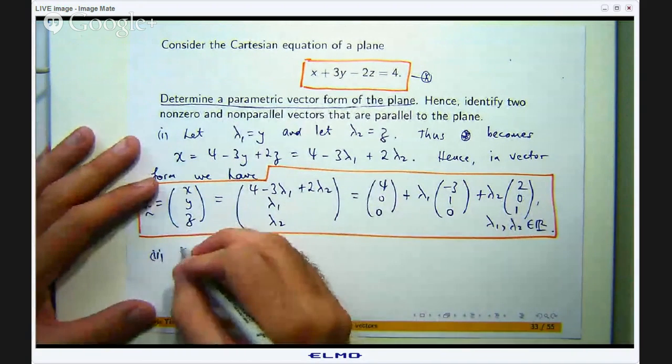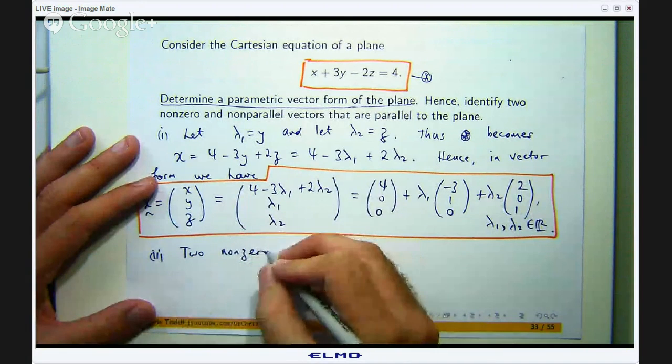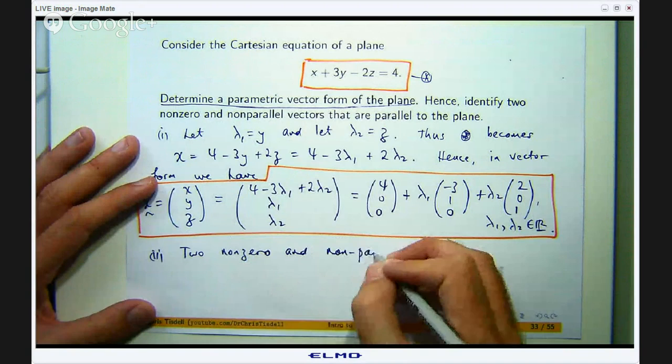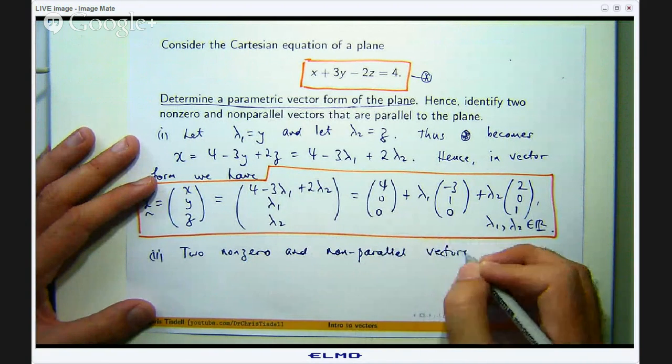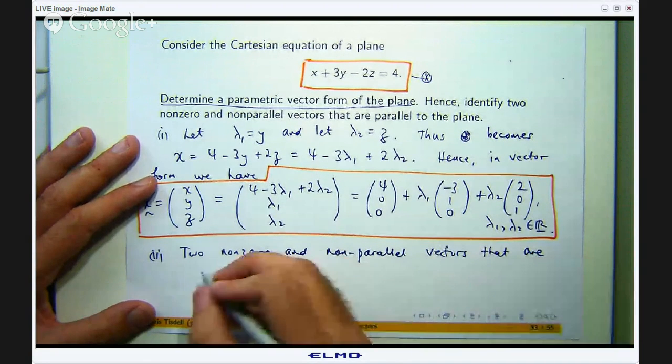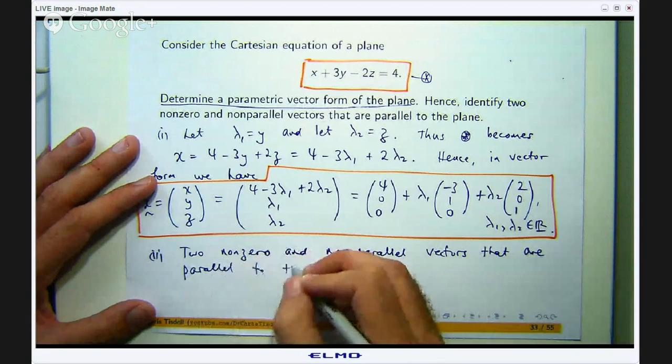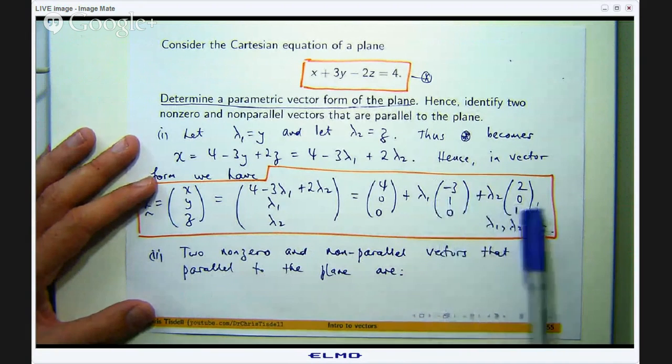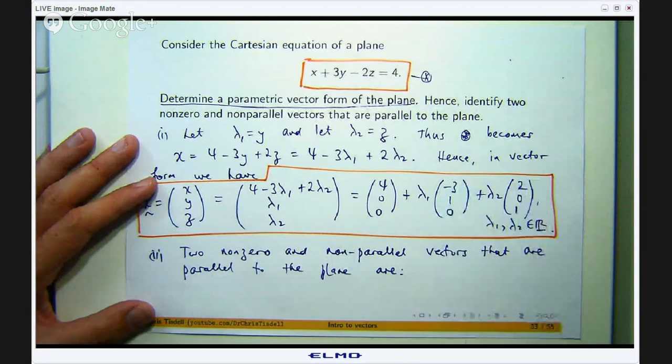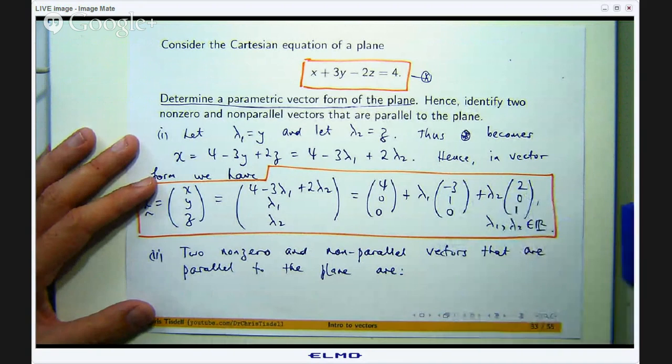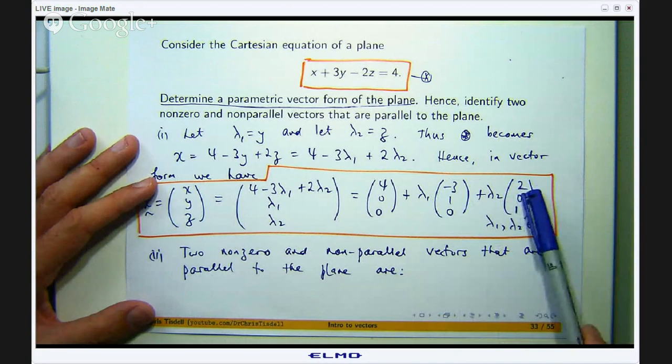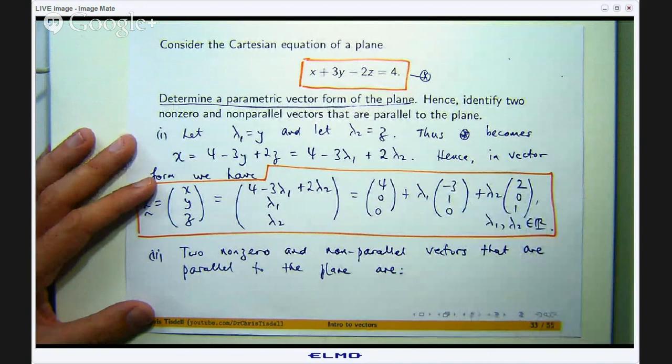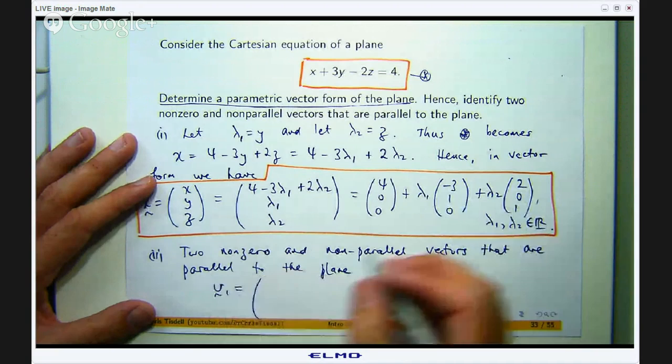They asked us for it, so let us do it. Let us just check that the non-zero and non-parallel vectors that are parallel to the plane are these two vectors. Now let us just check that that is definitely non-zero. That is definitely non-zero because a zero vector has all zero components. Are they non-parallel? Well, there is no way that you can make this vector out of a multiple of that vector and vice versa.